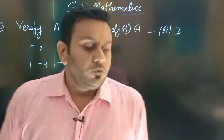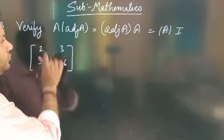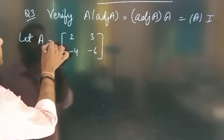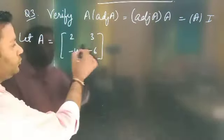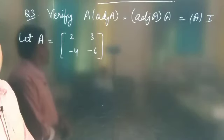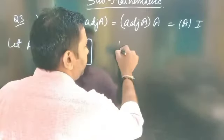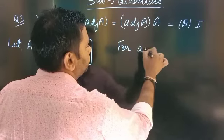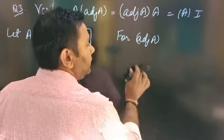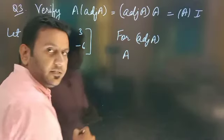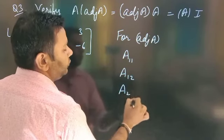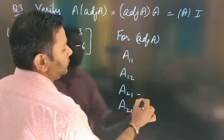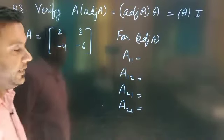First of all, let the given matrix be A. The order of the matrix is 2×2. So find out its adjoint. A11, A12, A21, and A22 are the cofactors of the elements of matrix A.